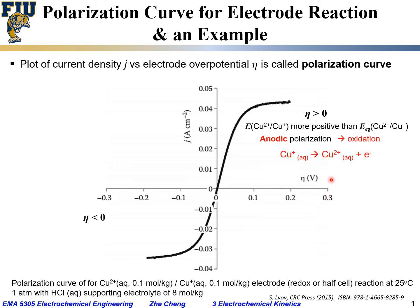The oxidation corresponds to Cu⁺ giving out an electron to form Cu²⁺. This is the positive overpotential case. We also designate the anodic current as positive by convention in this course, because it involves giving out electrons and going through oxidation.